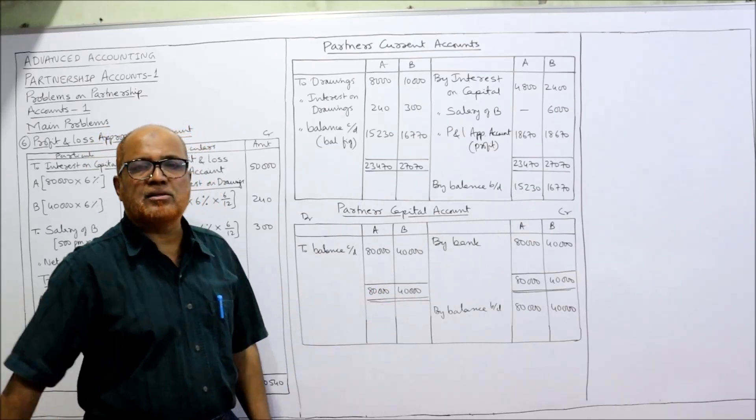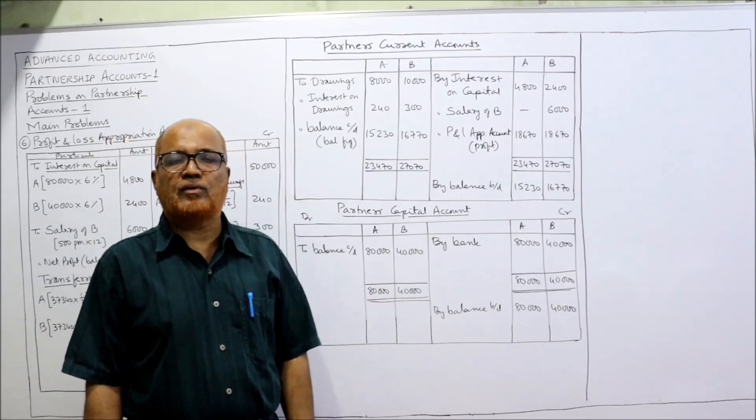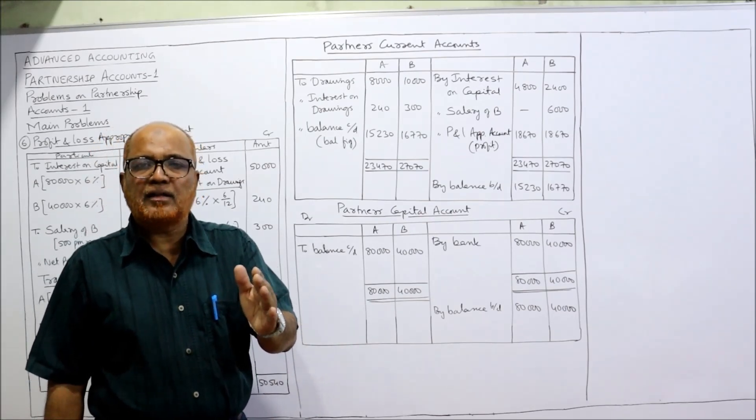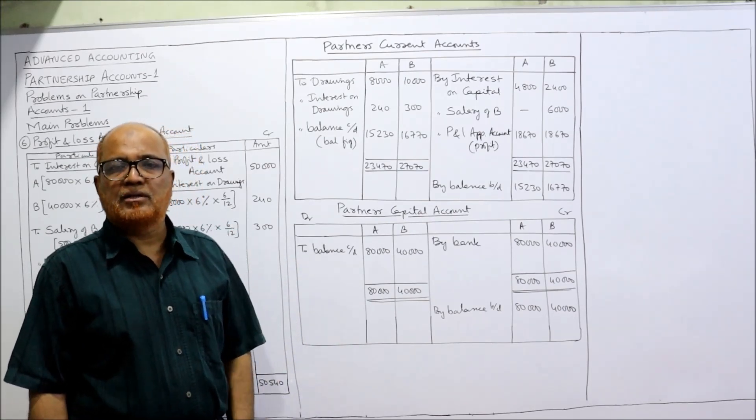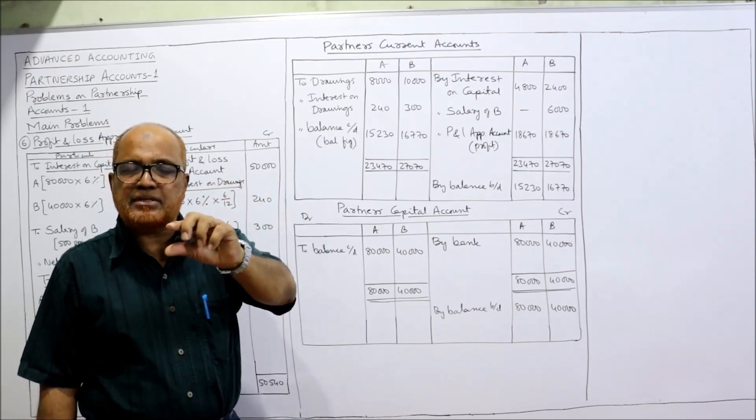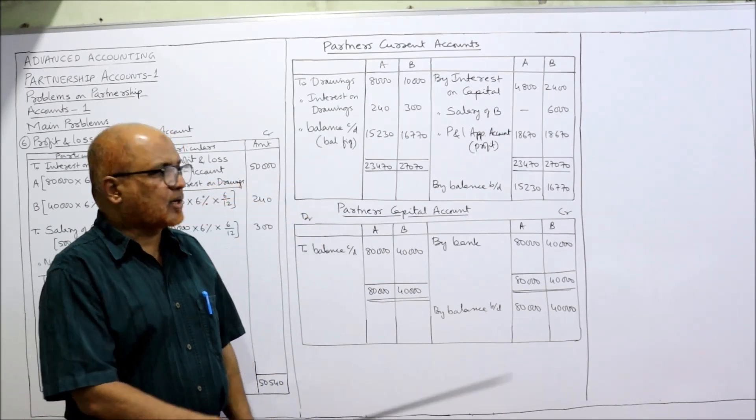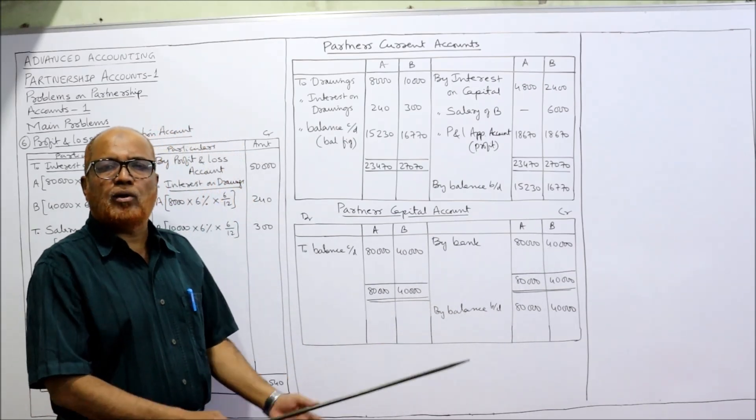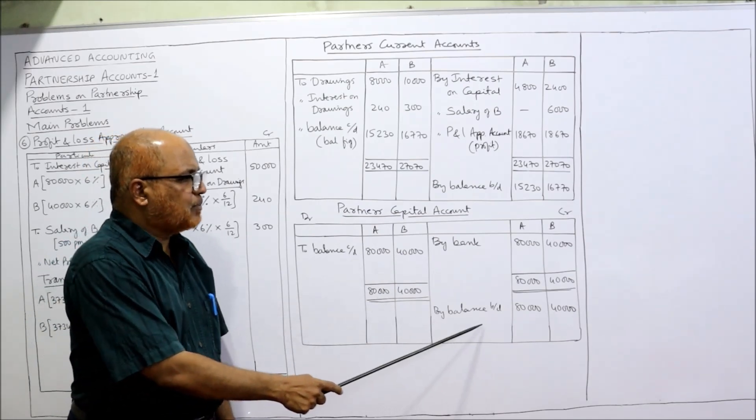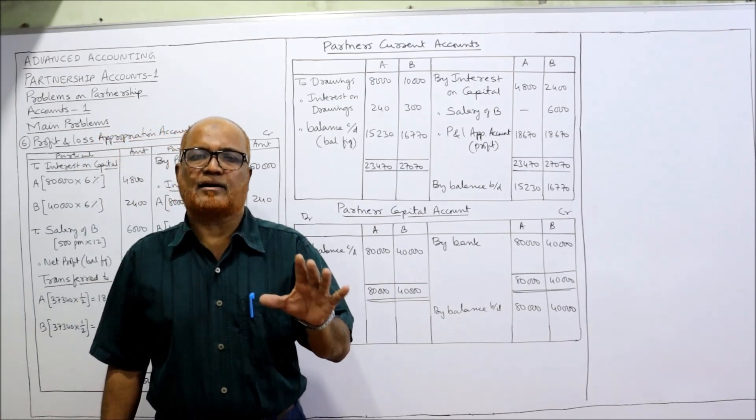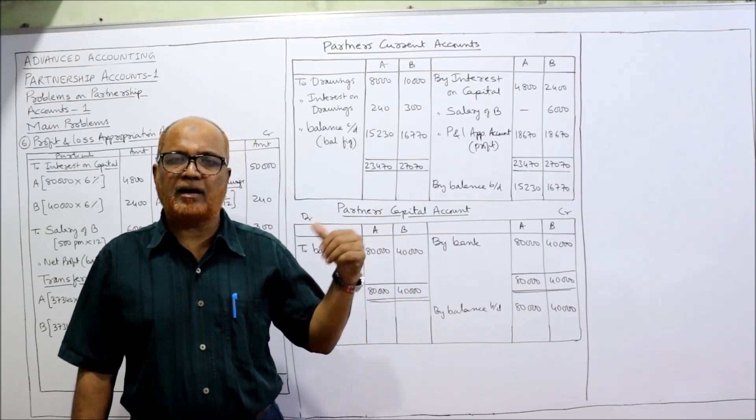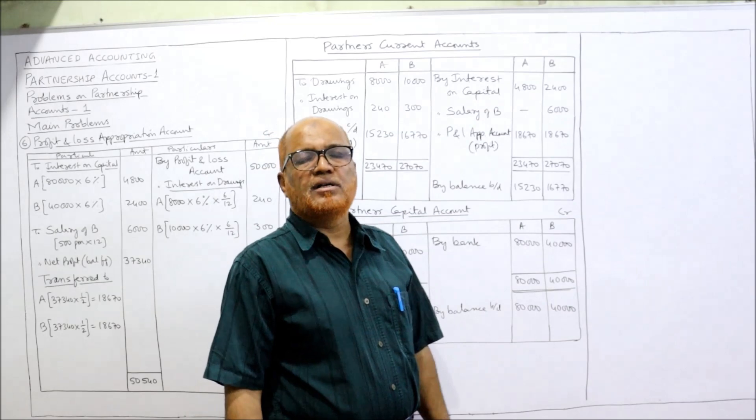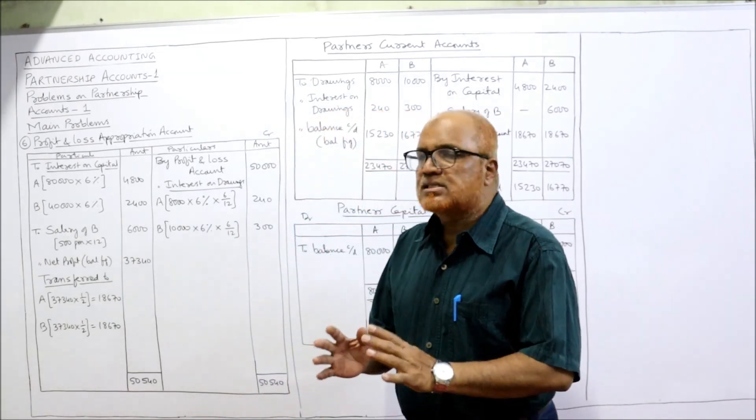Now this is the carried down balance and this is the brought down balance. Current account finished. Now capital account: at the beginning of the year they have started the business. The entry will be bank account debit, capital account credit. So credit side by bank: 80,000 and 40,000. Now simply you have to take the balance carried down, balance brought down because the capital will remain intact, same beginning and end. So this is the end of problem number six.